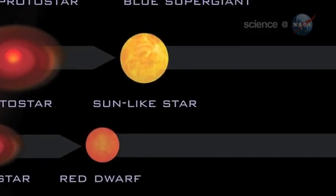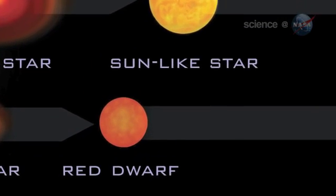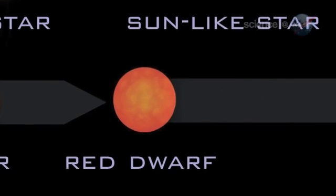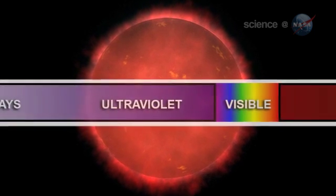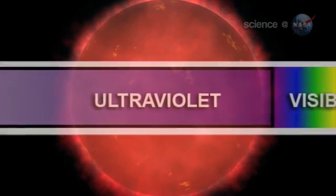These M-class stars, also known as red dwarfs, are excellent targets for direct imaging of exoplanets. Young red dwarfs produce a telltale glow in the ultraviolet part of the electromagnetic spectrum that GALEX can sense.